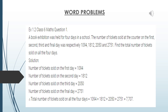Before starting this question, I take an example. Suppose I have bought two books for rupees 520 and rupees 350 — so how much amount did I spend? For finding this, we have to add. Now in this question, we write it as: number of tickets sold on first day that is 1094.